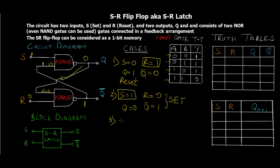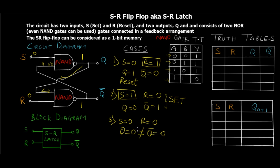For NAND Case 3: S = 0 and R = 0. Since S = 0, the upper NAND gate output is 1, and since R = 0, the lower NAND gate output is also 1. This means Q = 1 and Q-bar = 1, which is a contradiction. Unlike the NOR version where S=0, R=0 gave a latch state, in the NAND SR flip-flop S=0, R=0 gives a race condition — an unstable, unwanted output that must be prevented.